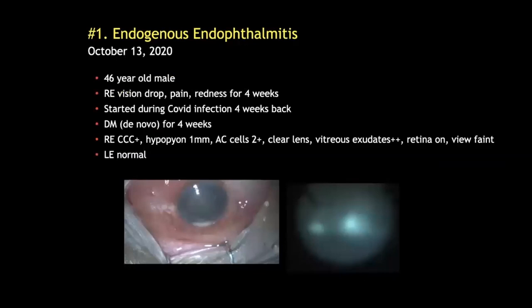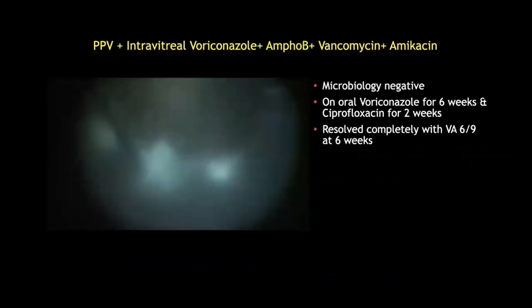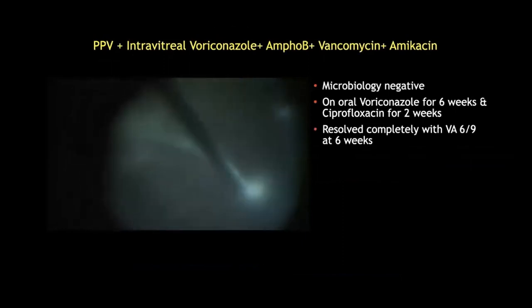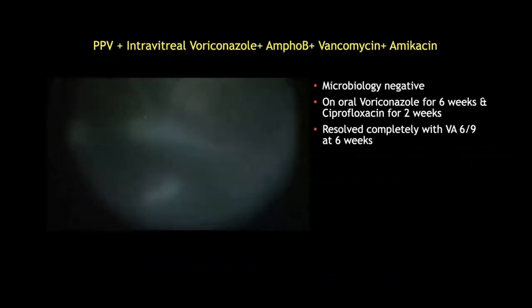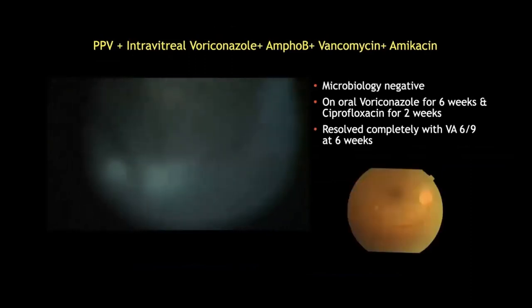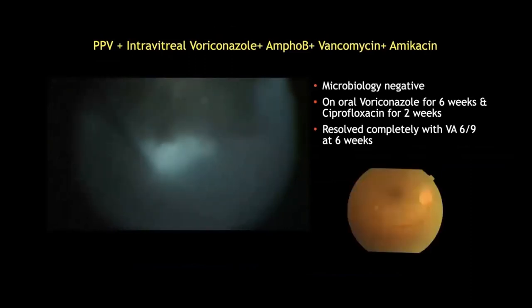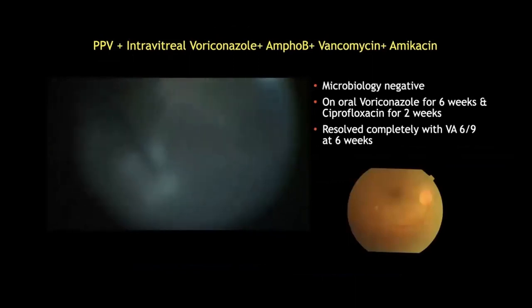Our first patient was a 46-year-old male who presented in October last year with symptoms of endophthalmitis of four weeks duration that started during his COVID infection, at which time he also developed diabetes. He was treated with pars plana vitrectomy and intravitreal antimicrobial agents. Vitreous microbiology was negative. He was placed on oral voriconazole and ciprofloxacin with complete resolution at six weeks.